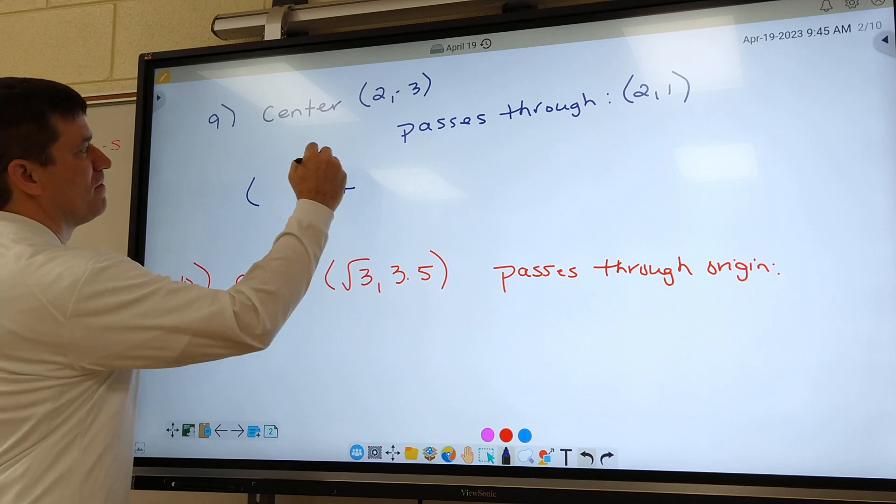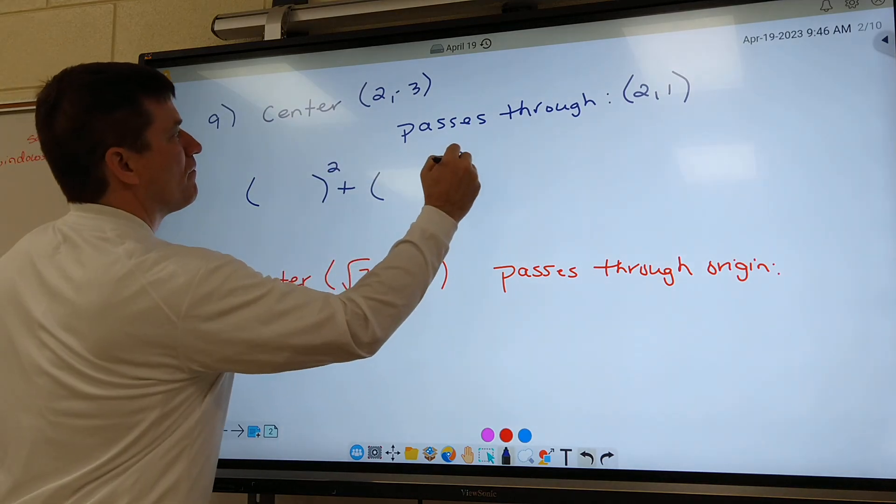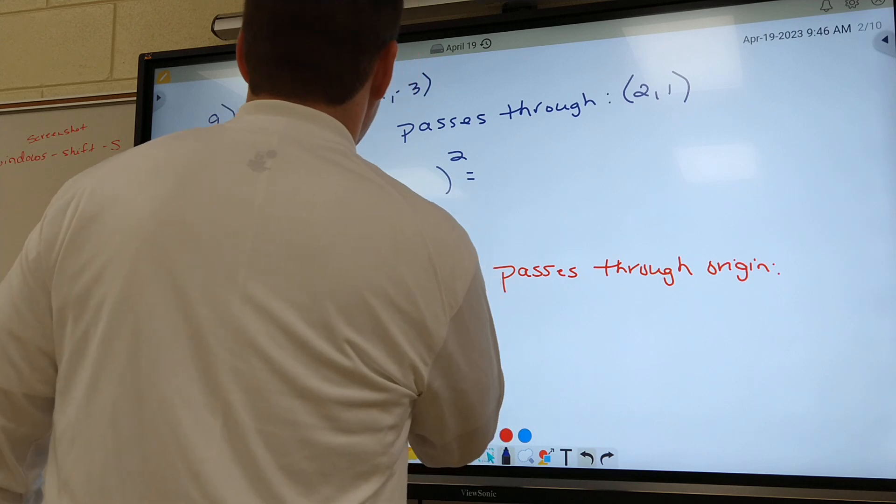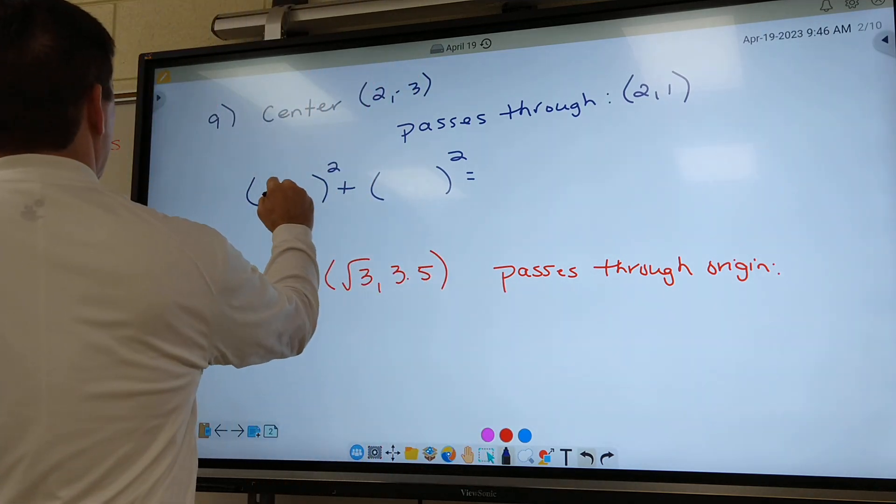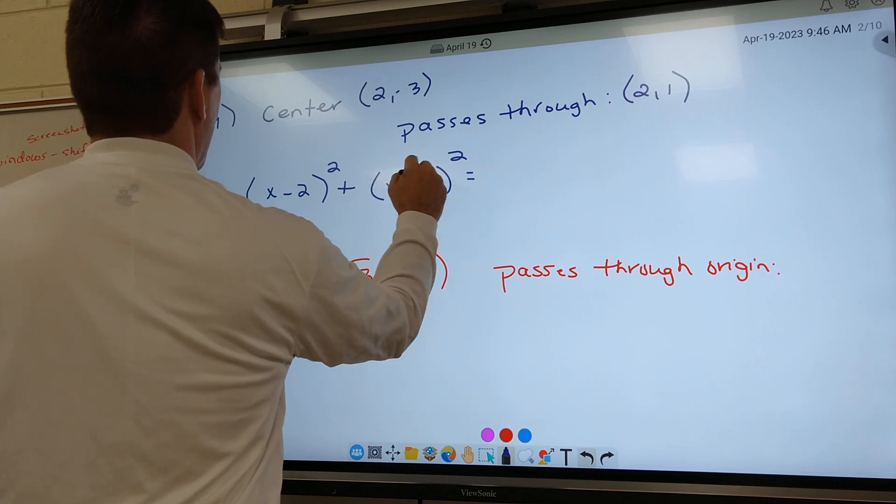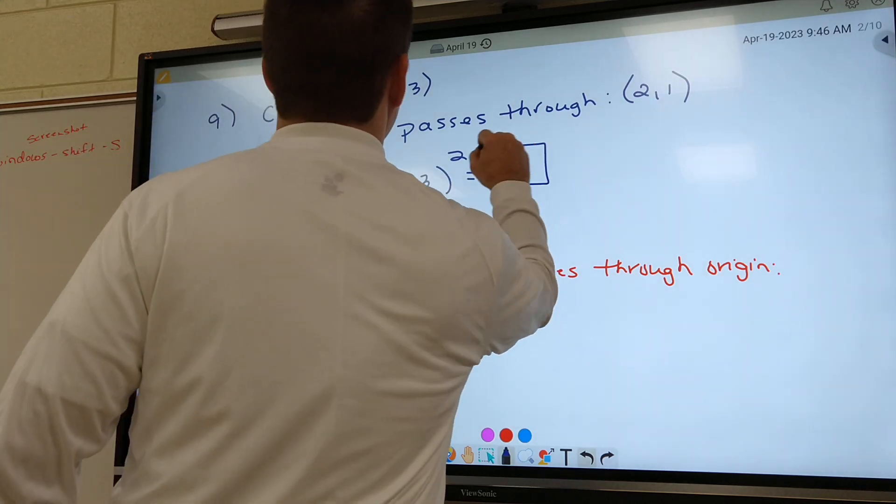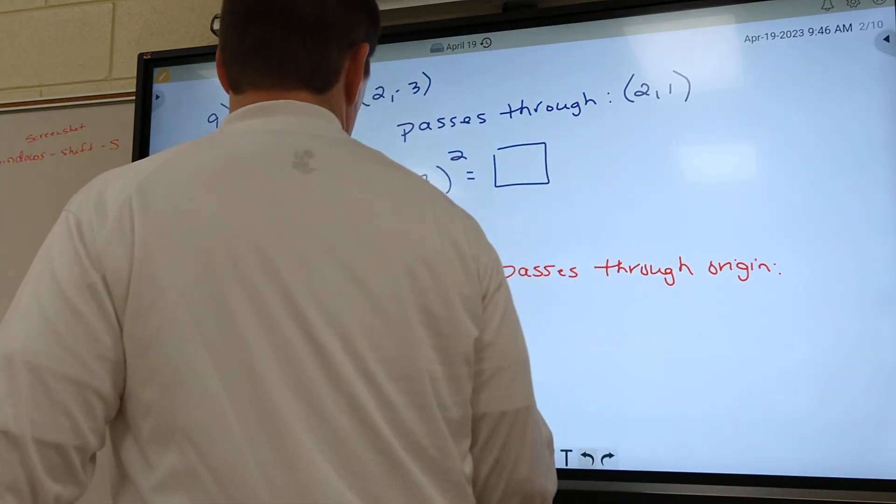Just give me one second. Okay. Write the center down. What goes in the first parentheses? It'd be x minus 2 and then y plus 3. Very good. Now, how do I know what goes right here? You plug 2 into the x and 1 into the y. Good job.